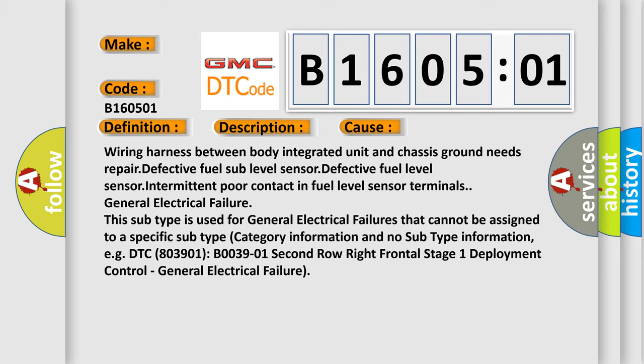This subtype is used for general electrical failures that cannot be assigned to a specific subtype category. Information and no subtype information. For example, DTC B003901: second row right frontal stage 1 deployment control. General electrical failure.